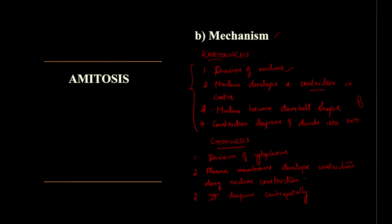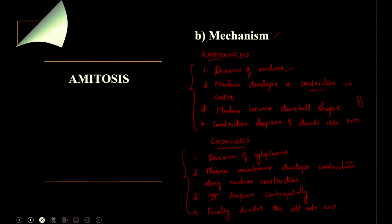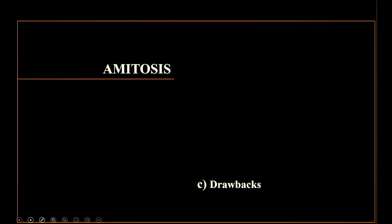Centripetally means the direction towards the center. Finally the plasma membrane divides the cell into two. Now let us see the diagrammatic representation of amitosis.